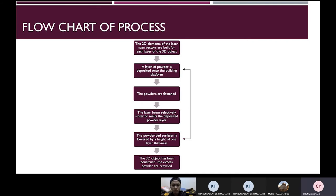Next, I will explain about the flowchart of process. The 2D elements of the laser scan vectors are built for each layer of the 3D object. Second step is a layer of powder is deposited onto the building platform. Next, the powder is flattened. Next, the laser beam selectively sinters or melts the deposited powder layer. The fifth step is the powder bed surface is lowered by a height of one layer thickness. Step two until step five is repeated. Then the 3D object has been constructed. The excess powder is recycled.